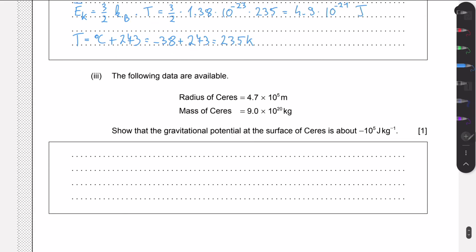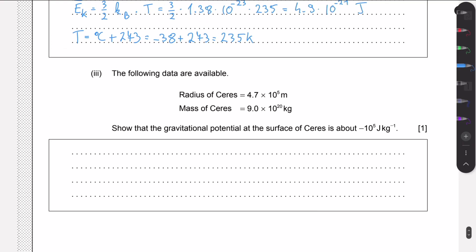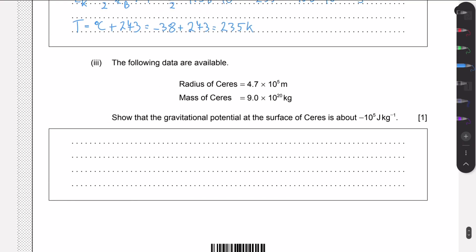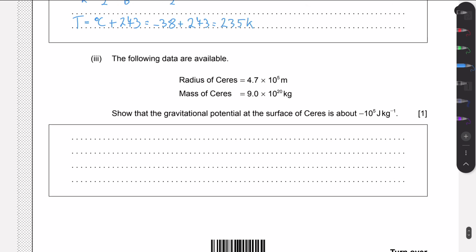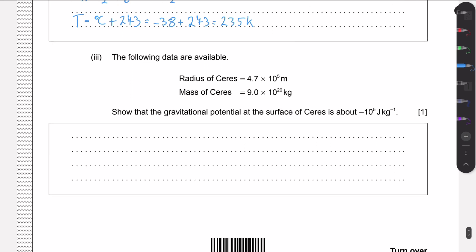The last part of the question is a bit about gravitation. We're given the radius and the mass of this dwarf planet, and we need to show that the gravitational potential at the surface is about minus 10 to the 5. We need to look in our data booklet and see what gravitational potential is, and we will see that it's just minus GM over r. Here we also just need to plug in the values. These questions were both 1 mark. These are usually just plug and chug.